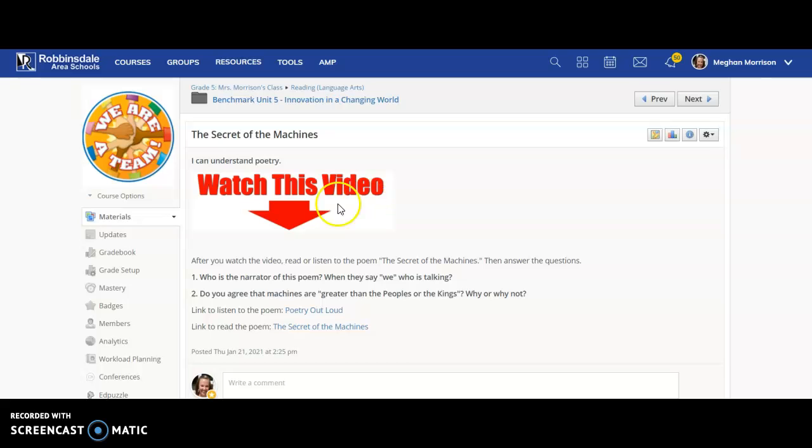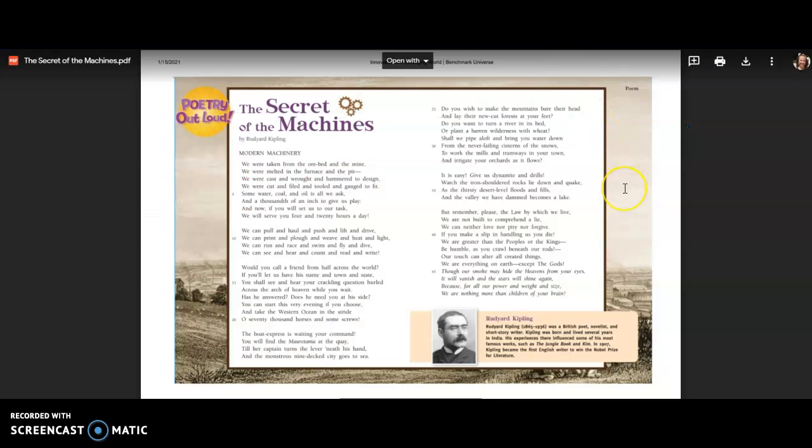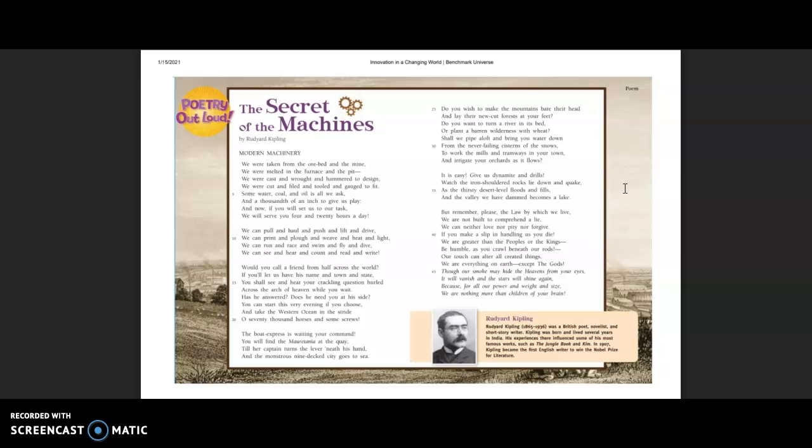The questions you're going to have to respond to is, who is the narrator of this poem? When they say we, who is talking? Because it starts out, we were taken from the ore bed and the mine, so from the earth. We were melted in the furnace and the pit. We were cast and wrought and hammered to design. We were cut and filed and tooled and gauged to fit. So who is that we that is talking?